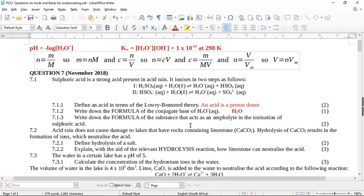Write down the formula of the substance that acts as an ampholyte in the ionization of sulfuric acid. So remember, an ampholyte acts as both an acid or a base. So in this situation, if you look at these two reactions, usually the answer to what's an ampholyte is water. But in this situation, water is not acting as an ampholyte. In both of these, the water is accepting a proton. So if you write water here, it's wrong.